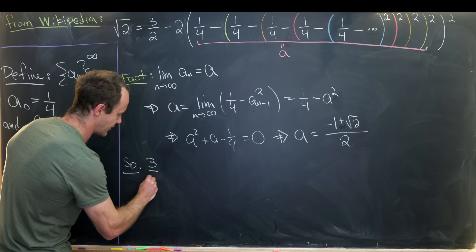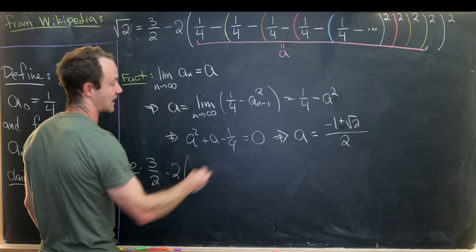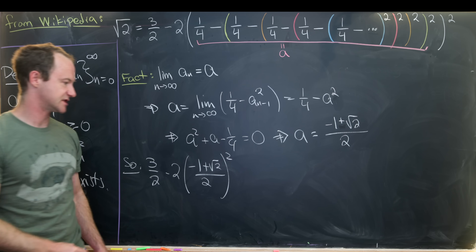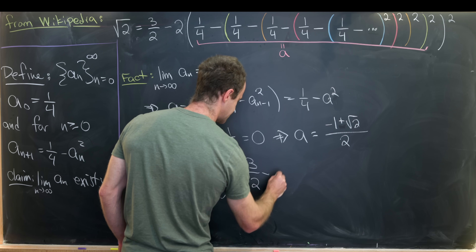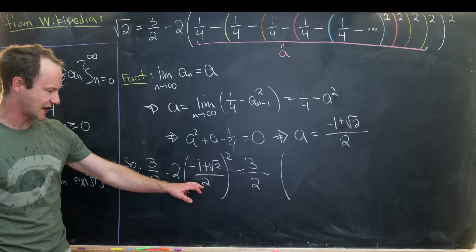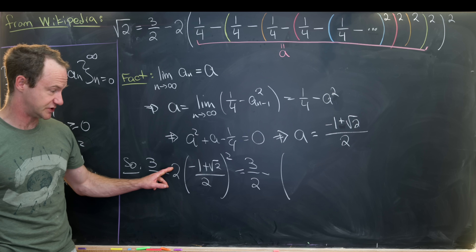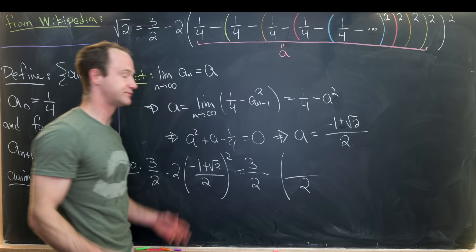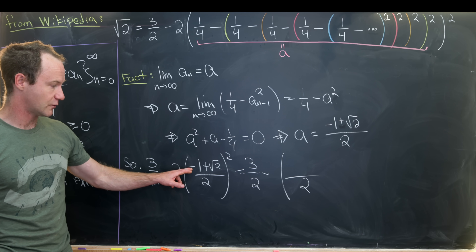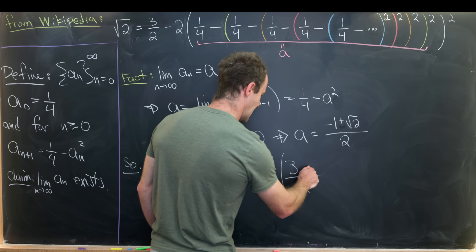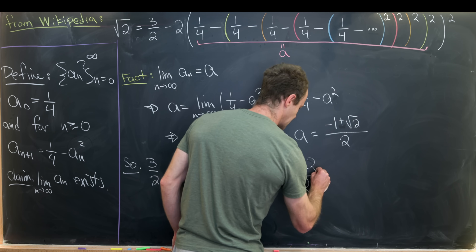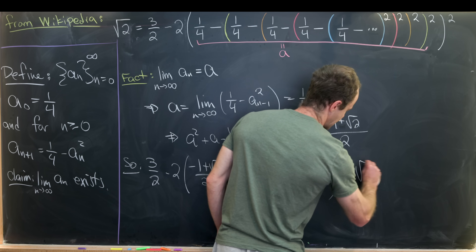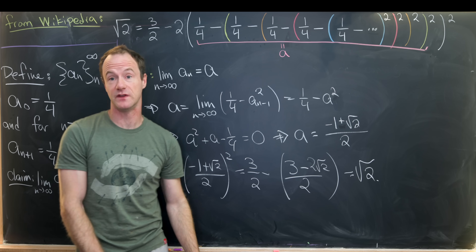Now we plug A into the original expression: 3/2 minus 2 times A, which is (−1 + √2)/2, all squared. Squaring gives us 3/2 minus 2 times [(1 − 2√2 + 2) / 4], and the 2 in front cancels the denominator partially, turning it into [3 − 2√2] / 2. So we get 3/2 minus (3 − 2√2)/2. The 3/2 terms cancel and the minus signs cancel, leaving us with √2 — exactly the value of the identity we found.